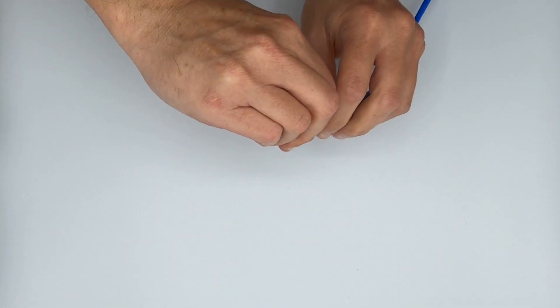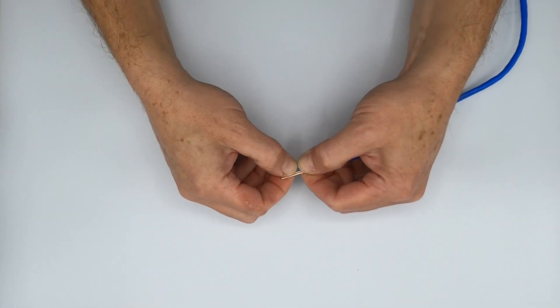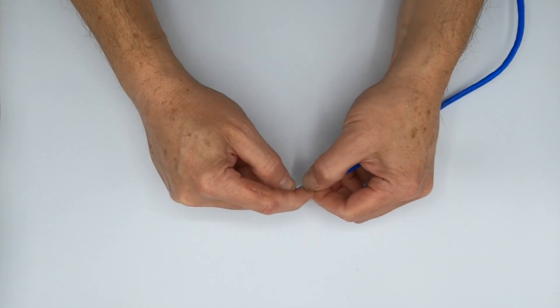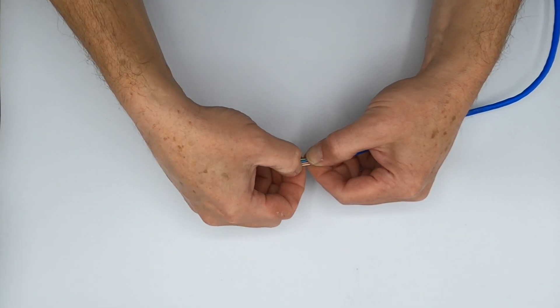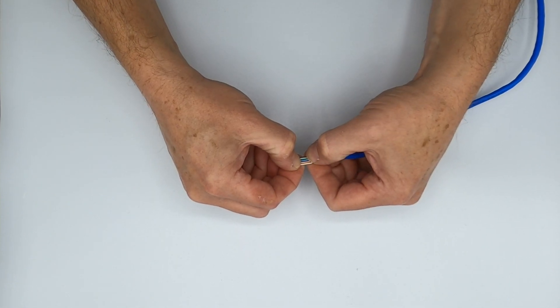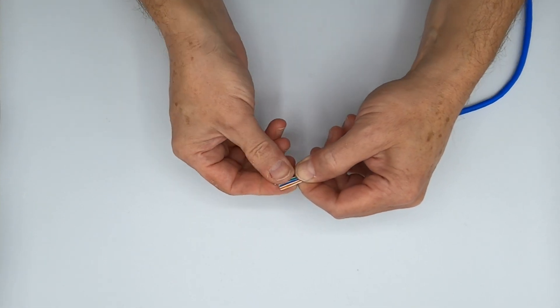Then what I do is I usually will flip the cable because I like to work from top down, so white-orange at the top and then brown at the bottom. Again, white-orange, orange, white-green, blue, white-blue, green, white-brown, brown. And they are in the correct sequence.